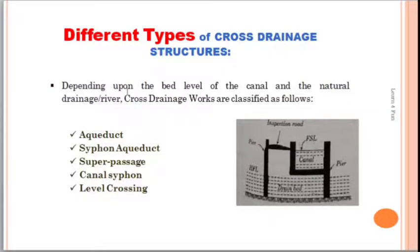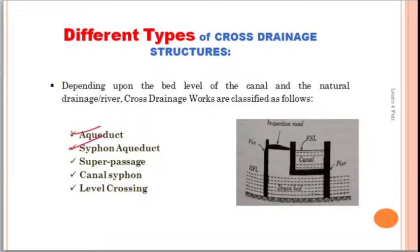There are different types of cross drainage structures depending upon the bed level of the canal and the natural drainage. Cross drainage structures are classified as follows: aqueduct, siphon aqueduct, super passage, canal siphon, and level crossing. This classification is based on the bed level of the canal and the natural drain.